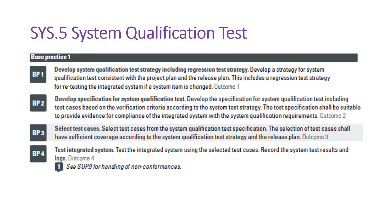BP3 talks about selecting test cases. When running a system test, we first run a complete cycle. But after some time, when we get a delta or a change in the requirement, we run tests for only that particular patch, module, or impacted elements of the system. This is how we pick and select specific test cases from the existing set to run against those changes.